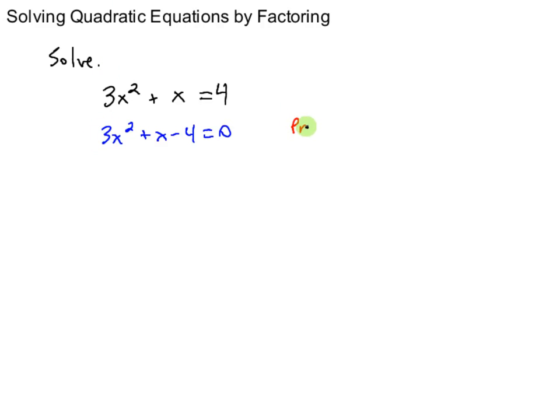And now I need to factor the left side, I'll use the AC method because there's not a one here. The AC method tells me my product is going to have to be a times c, three times negative four. And the sum is going to have to be a positive one here in the middle.